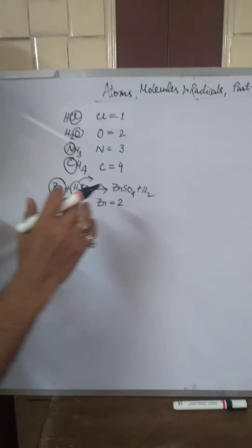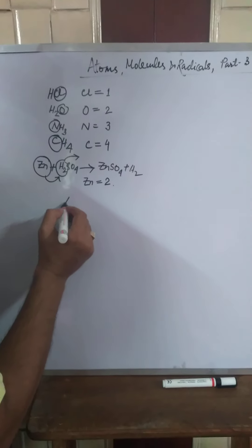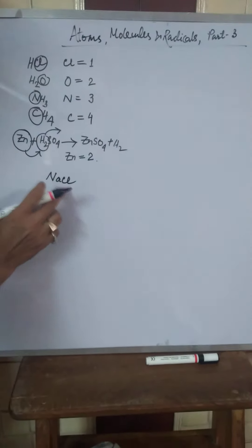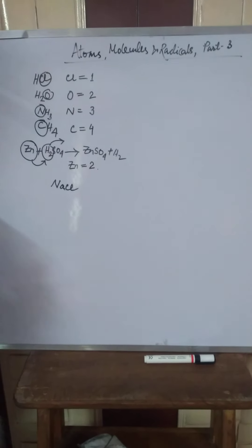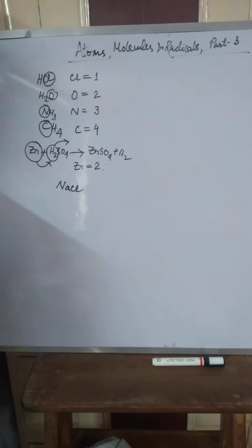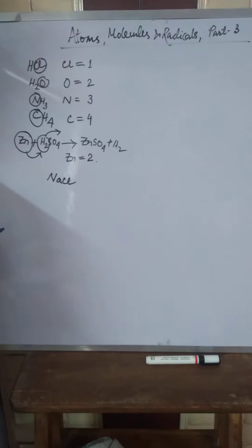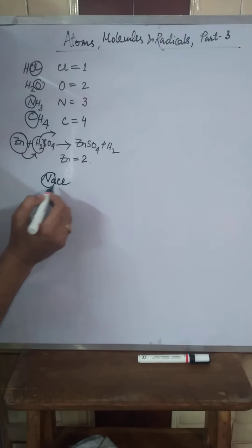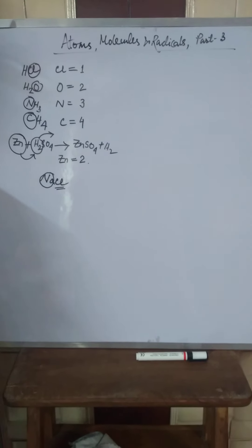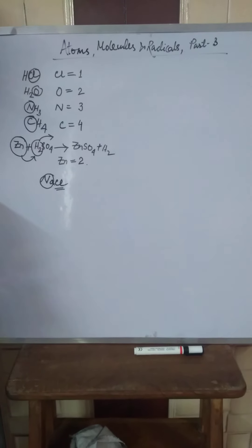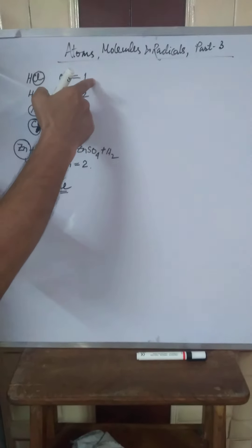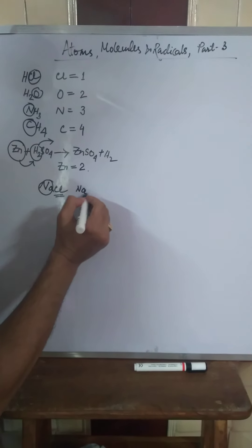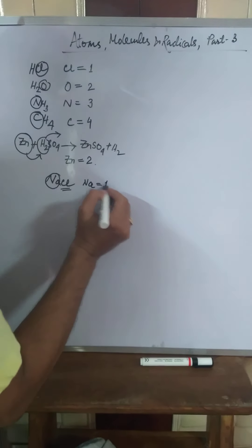I am giving you some other examples. Say, sodium chloride, NaCl — table salt. Here, hydrogen is not there, but you can find out the valency of sodium. You see that one atom of sodium is attached with one atom of chlorine. And what is the valency of chlorine? One. So, in that respect, the valency of sodium is one.